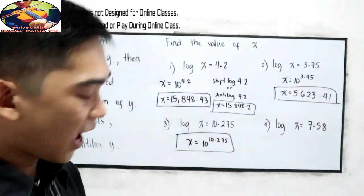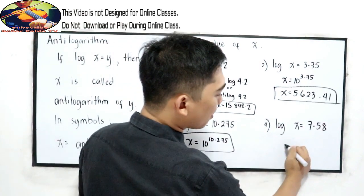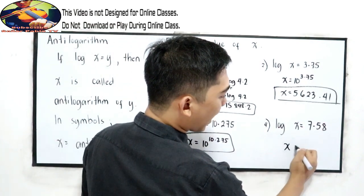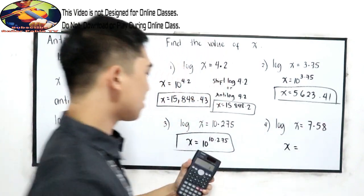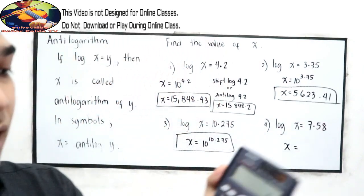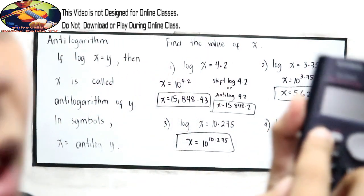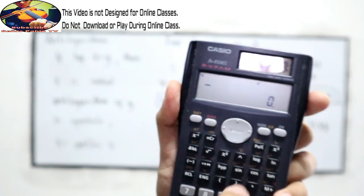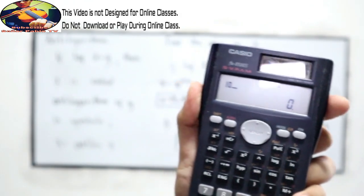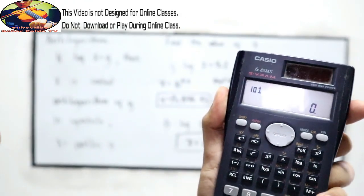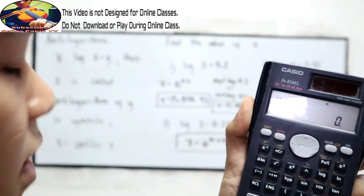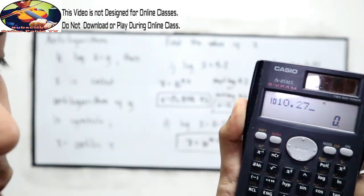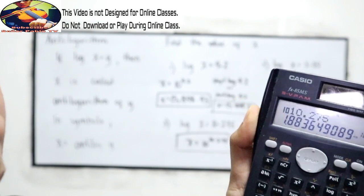Now number 4, let's try using the anti-log method. Press shift, log, 10.275. The result is expressed as a number times 10 raised to 10.